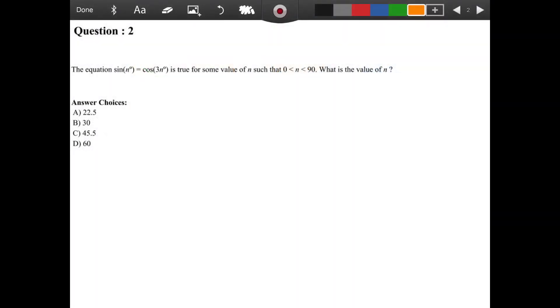Interesting question. And it says the equation sine of n degrees equals the cosine of 3n degrees, and that's true for some values as long as the value of n is between 0 and 90. We want to know what the value of n is. Now there are a few different ways to solve this. The first way I might do is to just simply guess and check, as long as I have access to a calculator and I'm in degree mode.